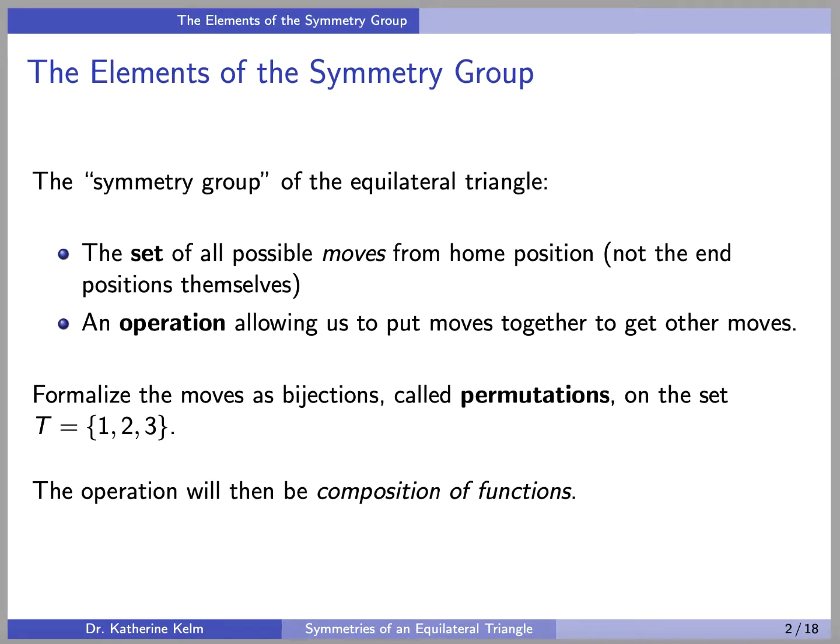The symmetry group of the equilateral triangle is the set of all possible moves from home position, not the end positions themselves, along with an operation that allows us to put moves together to get other moves.